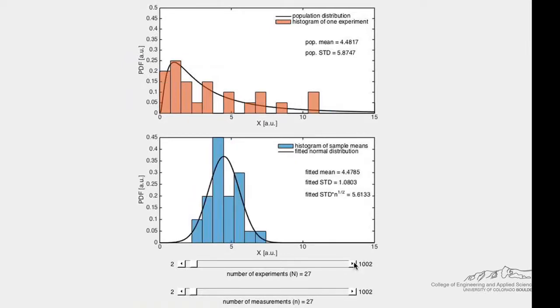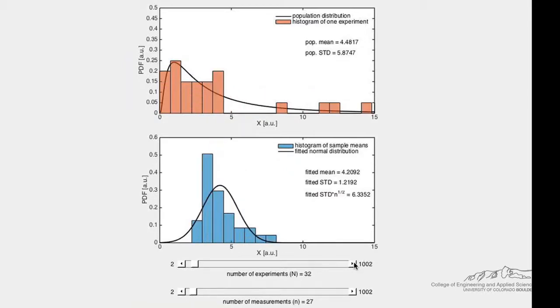we can generate a histogram of the means of the measurements from each experiment shown in blue in the lower plot.